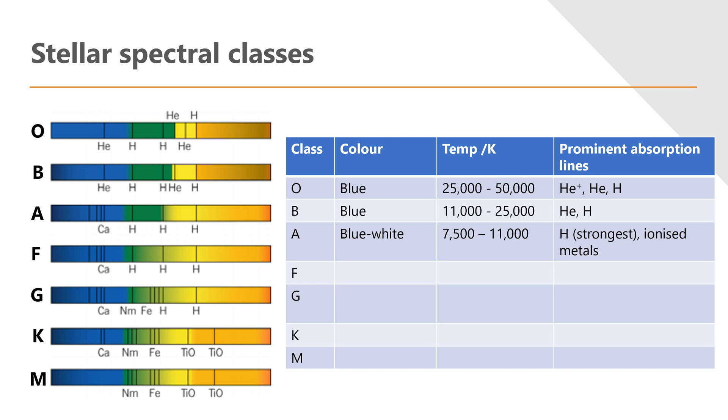But then we do start to get some ionized metals. So we start to see things like calcium, which in astronomical terms is definitely what we would call a metal. And those ionized metals have had electrons stripped off of them again due to the high temperature. But the A class star is cool enough for more complex or larger atoms to have started to form.